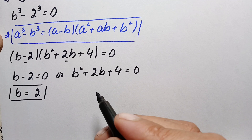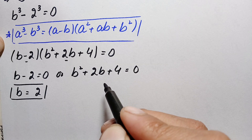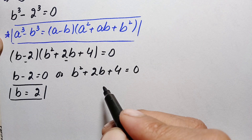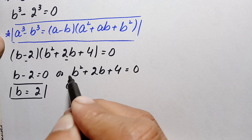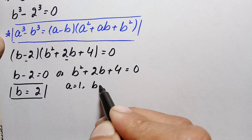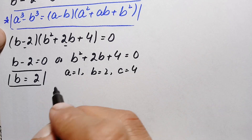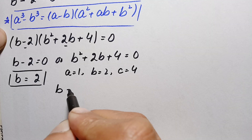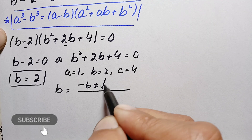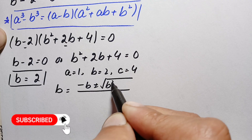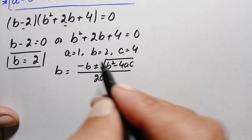Now we solve the quadratic equation b squared plus 2b plus 4 equals zero. We cannot factor it, so we use the quadratic formula. Here, the value of a is 1, b is 2, and c is 4. The quadratic formula is: b equals minus b plus or minus the square root of (b squared minus 4ac), divided by 2a.